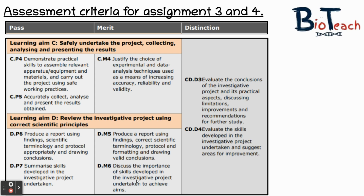For the distinction standard, you're required to review the information that you've obtained from your research and practical work and decide on its validity, reliability, accuracy, and whether the original hypothesis of your work has been met. You should include an evaluation of alternative experimental approaches, the modification or rewriting of any of the hypotheses that you made, as well as the strengths and weaknesses of your approach towards your experiment.